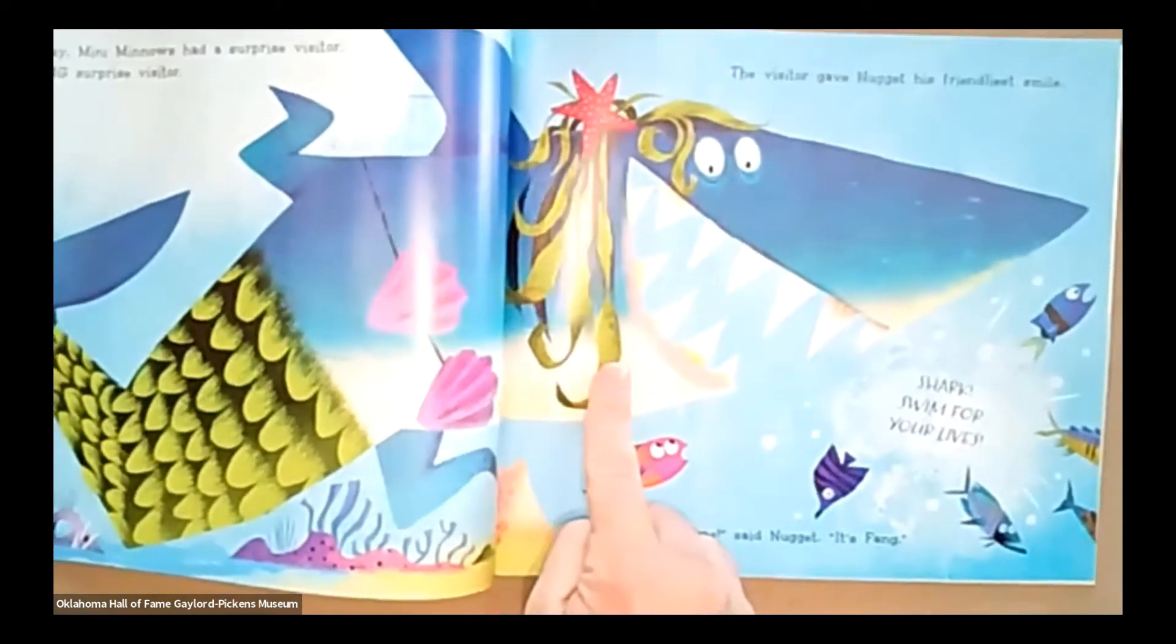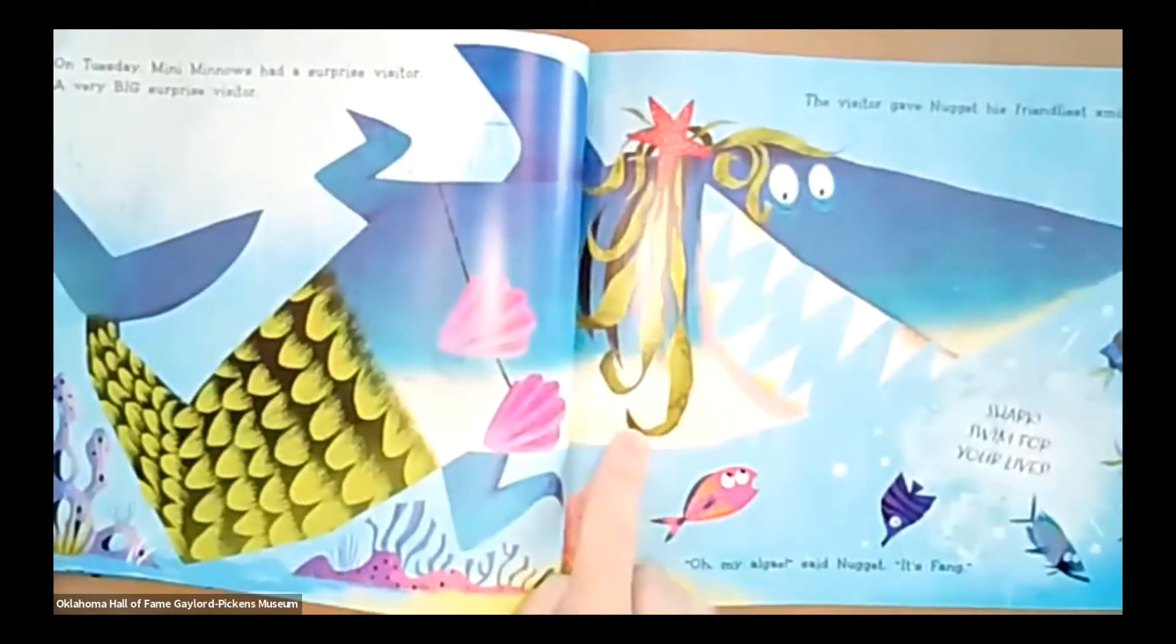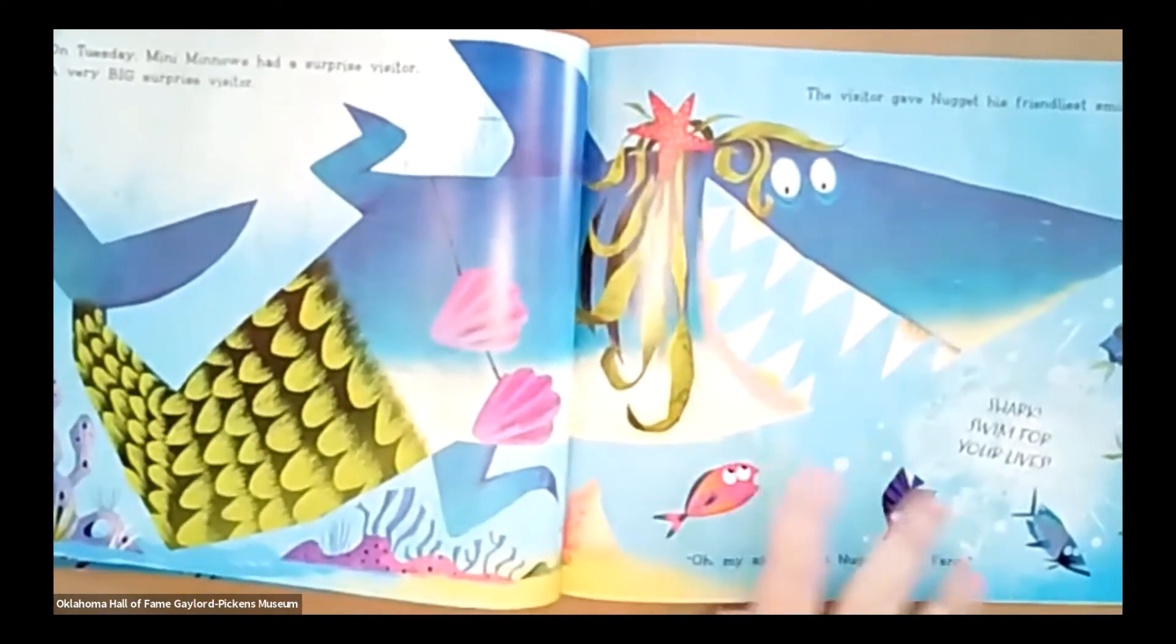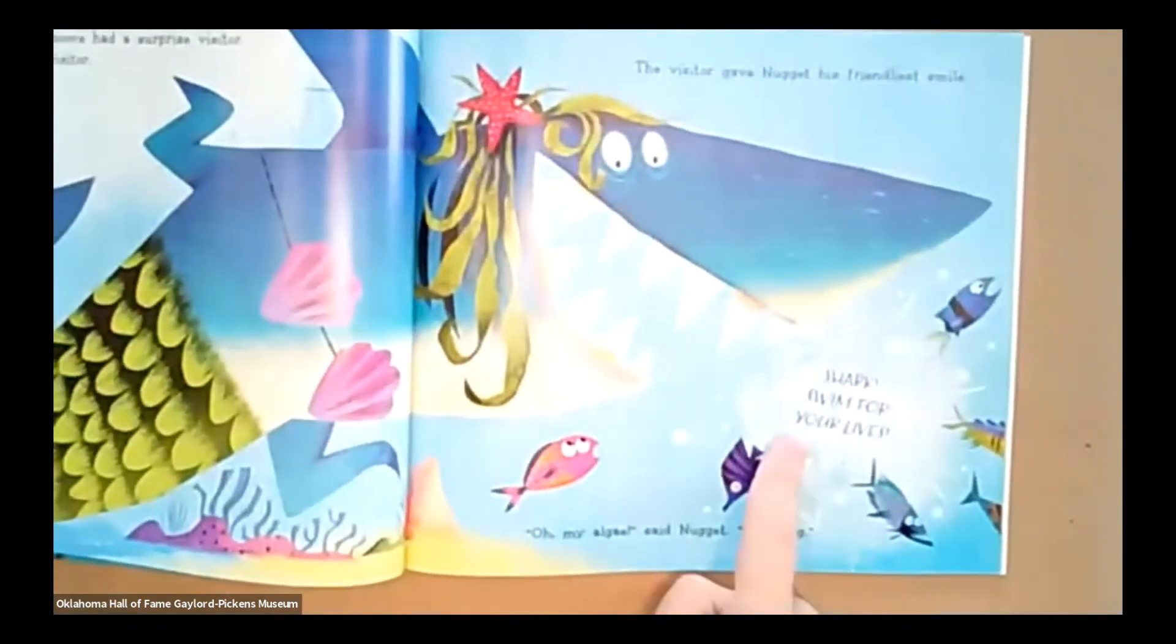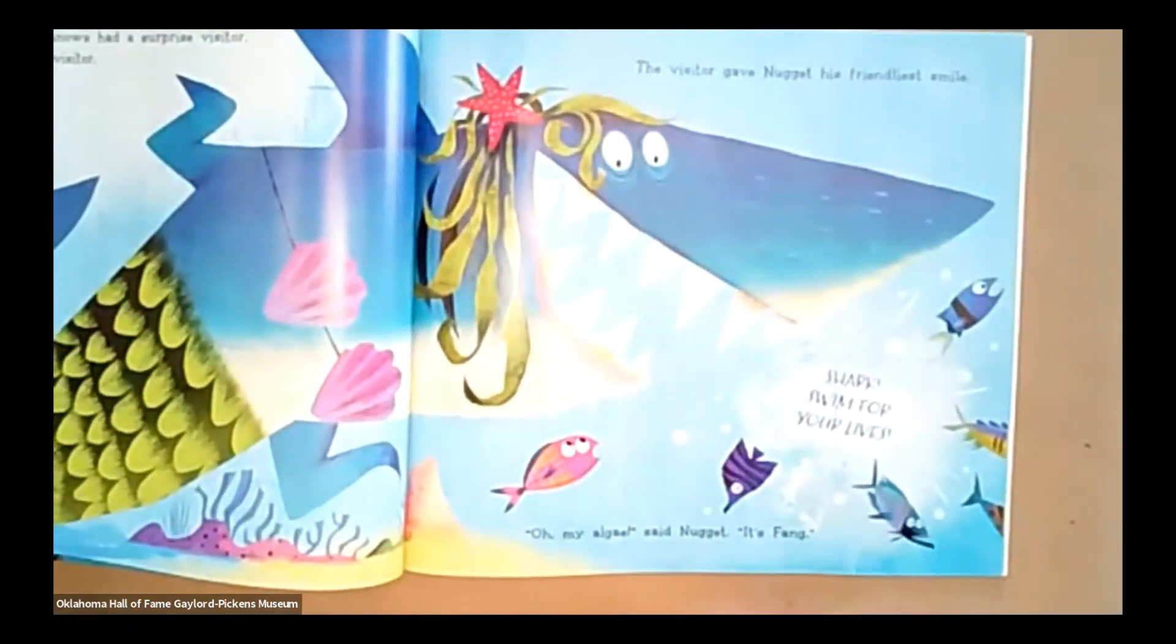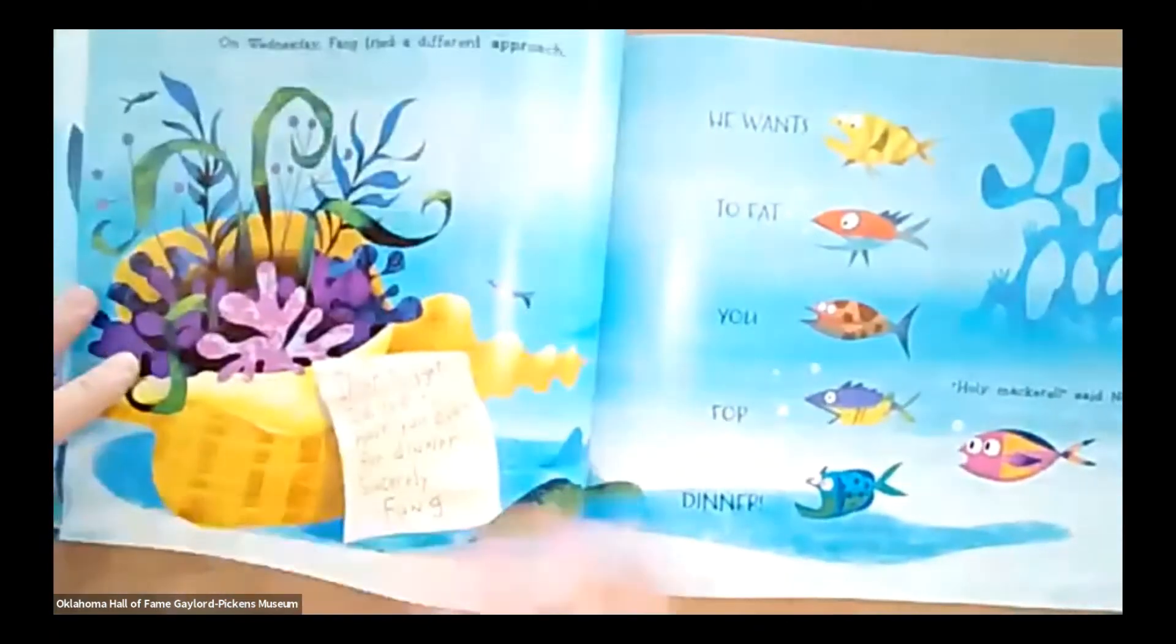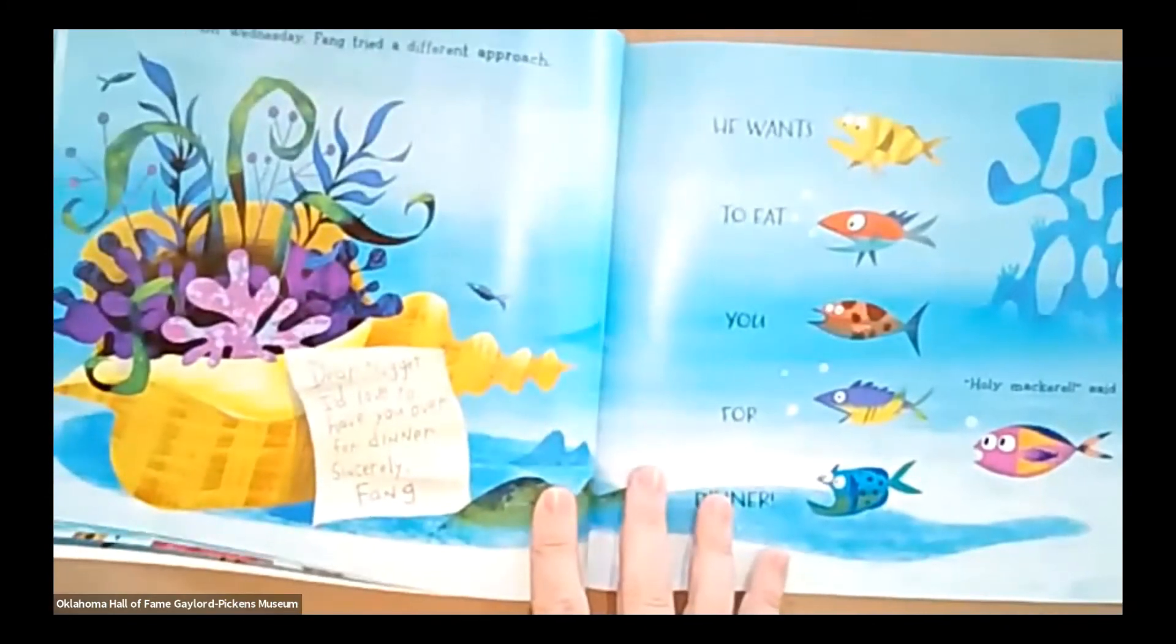The visitor gave Nugget his friendliest smile. Oh, my algae, said Nugget. It's Fang. Look at Fang. Fang's all dressed up. Oh, Fang looks like he dressed up as a mermaid. But this classmate still saw through it. Sharks swim for your lives!